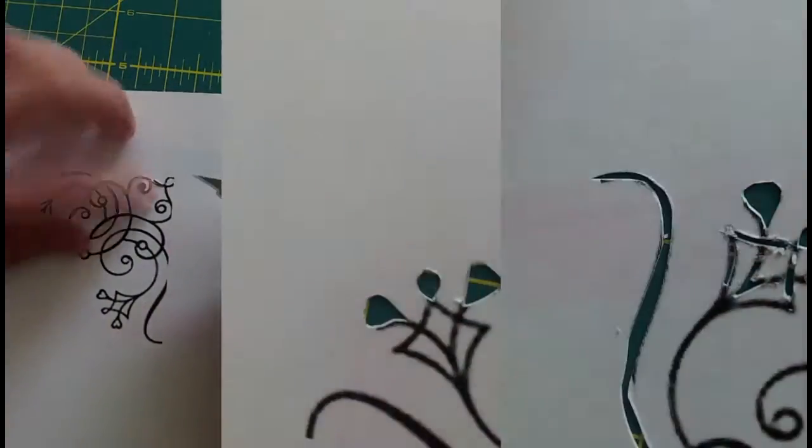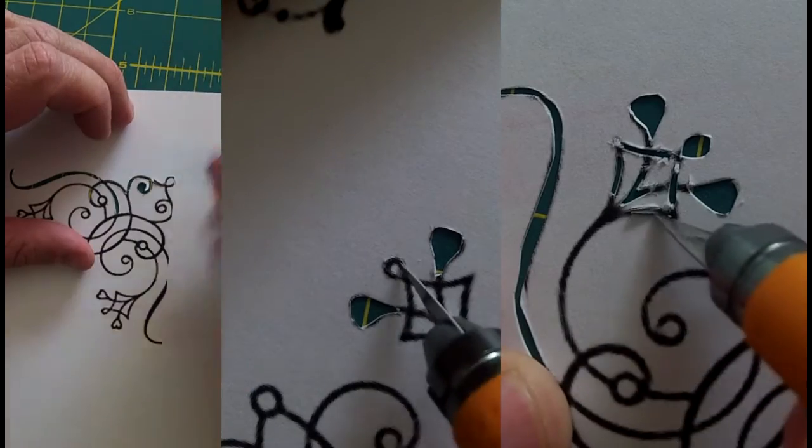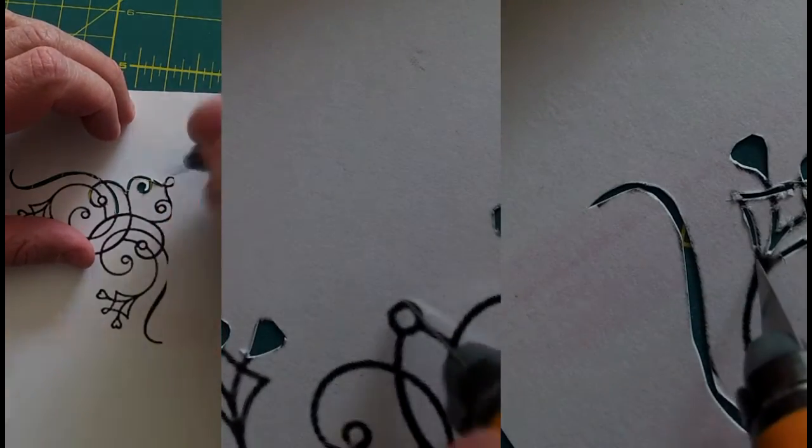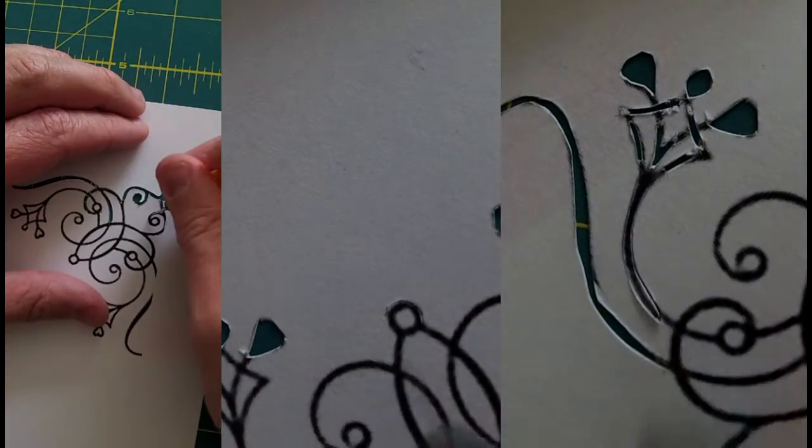Here we're using a printed pattern for the scrollwork printed onto card. I'm then cutting out the lines leaving connecting elements at corners and joints so that the whole thing doesn't fall apart into pieces.